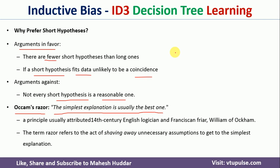Because of Occam's Razor, shorter trees or shorter hypotheses are preferred compared to longer trees or longer hypotheses in ID3 learning algorithm. In this video, I have discussed what inductive bias is, the different types of inductive bias used in ID3 algorithm, and the arguments in favor and against this inductive bias. I hope the concept is clear. If you like the video, do like and share with your friends, press the subscribe button for more videos, and press the bell icon for regular updates. Thank you for watching.